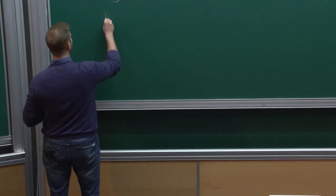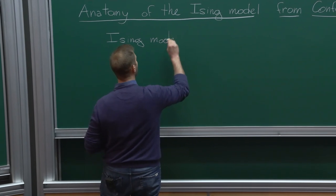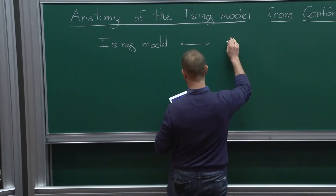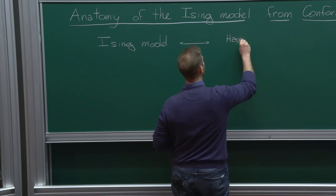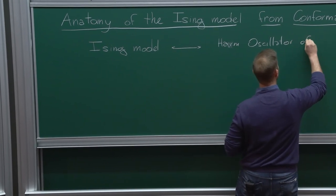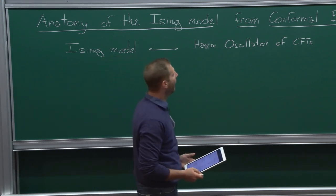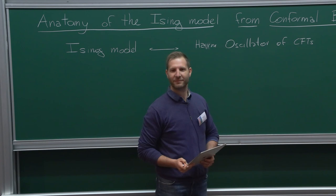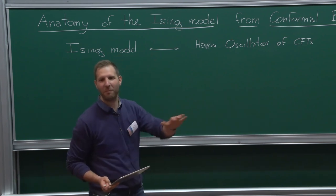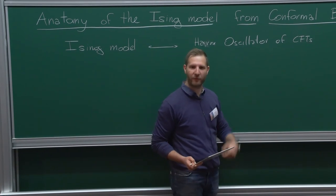What I would like to do in this seminar is give you a flavor of what conformal bootstrap is and how it has been used in the last ten years to extract information about the three-dimensional Ising model. The Ising model, in a sense, is like the harmonic oscillator of conformal field theories — it's the model where you try to test all your ideas. I'll start by trying to convey the main idea of conformal bootstrap via a very simple example that has nothing to do with the Ising model but is very illuminating.